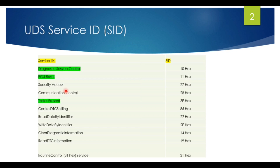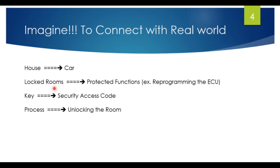Security access in UDS is a feature that protects certain diagnostic functions, ensuring only authorized users can access them. Why do we need security access? When a vehicle is diagnosed in a garage, the vehicle needs to know whether the tool is authorized or not. The integrity of the diagnostic tool is checked through security access. Without security access, a running issue could be restarted or its behavior changed.